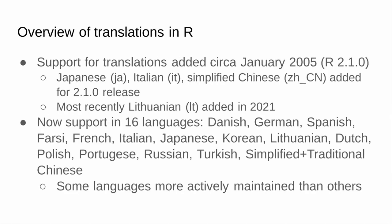R has been supporting translations since about R 2.1, which is about 16 years ago, when Brian Ripley added integration with gettext to start doing translations for R. The first release had Japanese, Italian, and simplified Chinese. As recently as 2021, Lithuanian was added, and as of now there are about 16 languages in various degrees of maintenance.